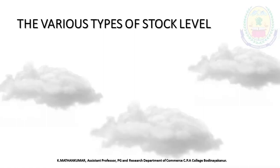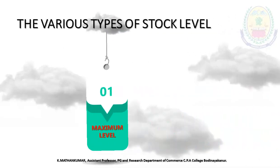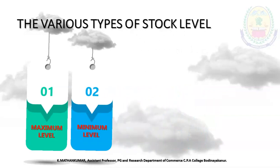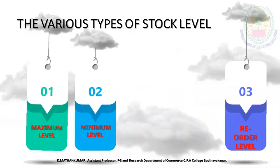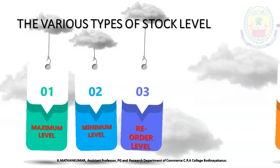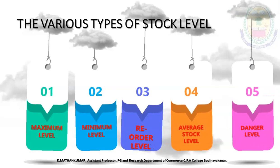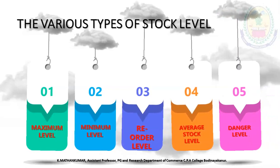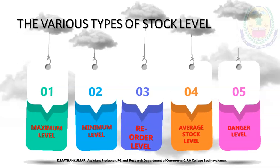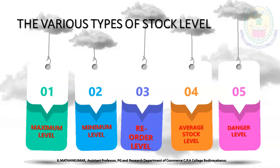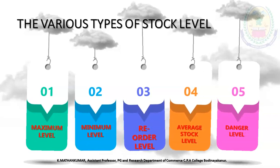There are various types of stock levels. These are: first, minimum level; second, maximum level; third, reorder level; fourth, average level; and finally, danger level. These five levels are the various types of stock levels maintained in the warehouse during manufacturing.